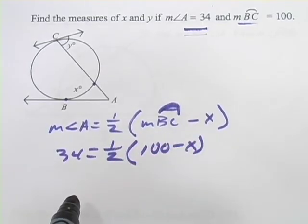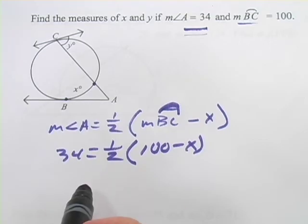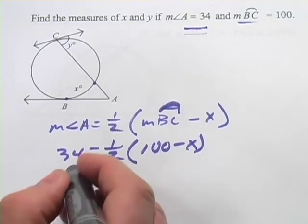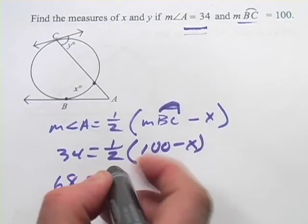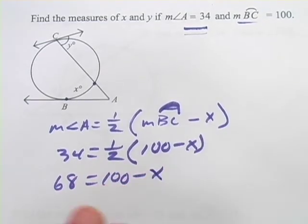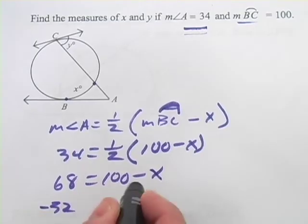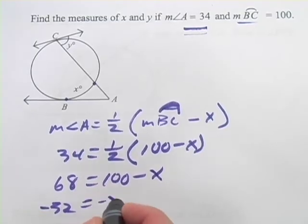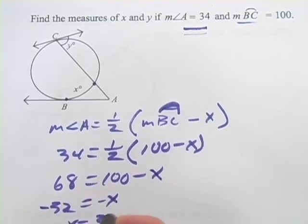I think at this point, what I would do is just multiply both sides of the equation by 2 to get rid of that one half. I don't want to deal with fractions if I don't have to. So that's 68 equals 100 minus x, and that would be negative 32 equals negative x, or x equals 32.